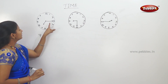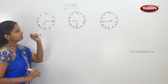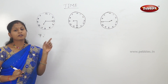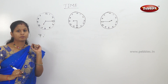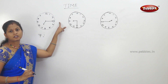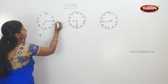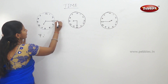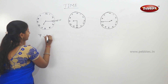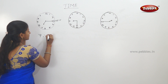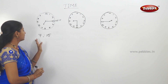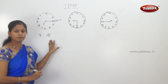Long hand is 3. Each number represents 5 minutes, so 3 times 5 is 15 minutes. 15 minutes. 7 hours, 15 minutes.